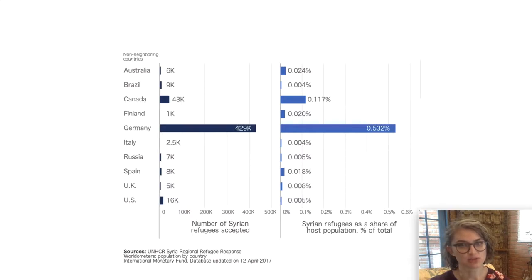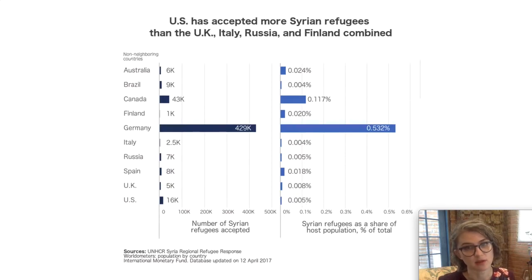One of the studies that she did was to show this visualization to a group of participants, which shows the number of Syrian refugees accepted by each of these listed countries. The obvious thing about this graph is that Germany over here has accepted overwhelmingly more refugees than any other country listed. Canada is over here in second place, and everything else seems pretty negligible. The U.S. is way down here with 0.005% of the population. But the title of the graph that she showed to these people was, The U.S. has accepted more Syrian refugees than the UK, Italy, Russia, and Finland combined. That's probably not a conclusion that you would have drawn yourself by looking at this data or looking at this visualization, but it is true if you add up the numbers in the left column.